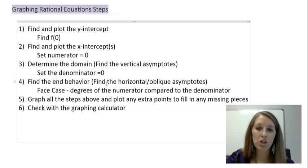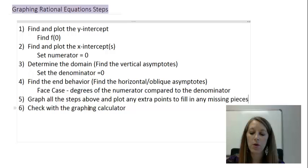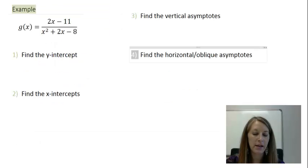We put all of that information on a graph, and then hopefully that gives us enough information. If not, we can fill in any missing pieces by plotting extra ordered pairs, and we can always double-check by using our graphing calculator.